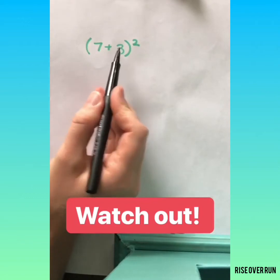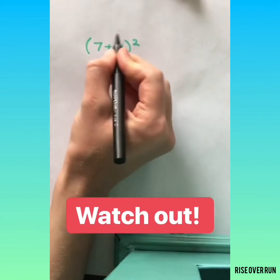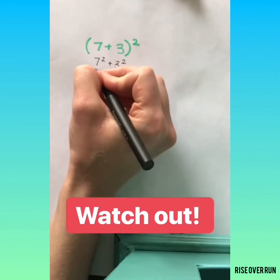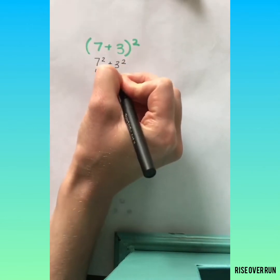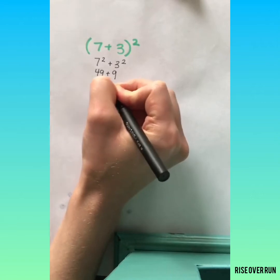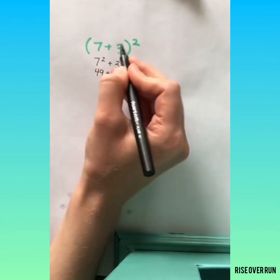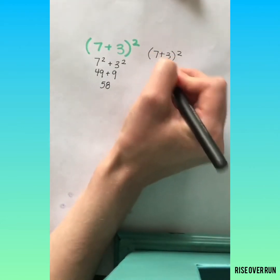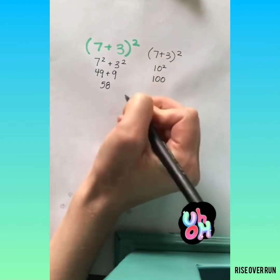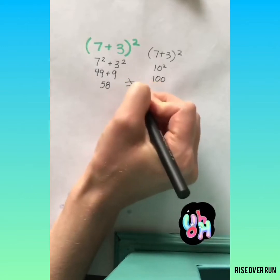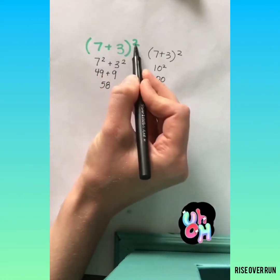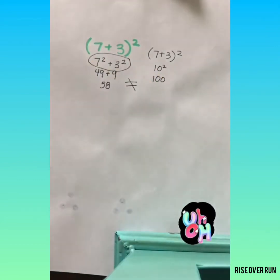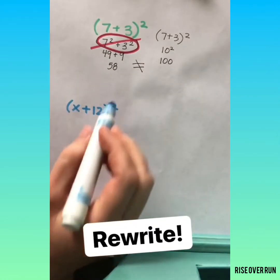Let's do a little experiment. Some students see this and think that they can just apply this exponent to both numbers. Let's see what happens. 7 squared is 49. 3 squared is 9. Add those together and I get 58. But let's back up here. If we use order of operations to simplify this expression 7 plus 3 is 10 and 10 squared is 100. 58 does not equal 100. So be sure that you do not just simply stick this exponent on both of these numbers. This here is incorrect.